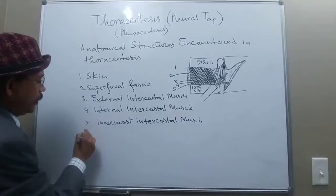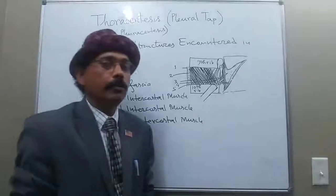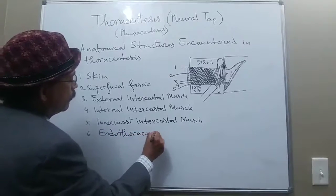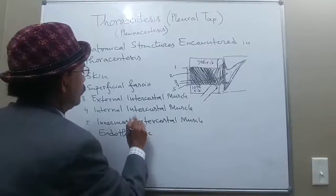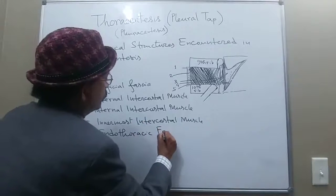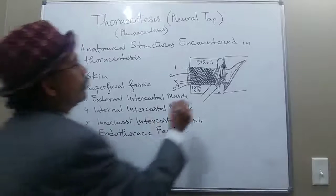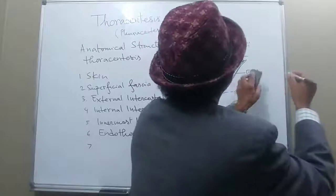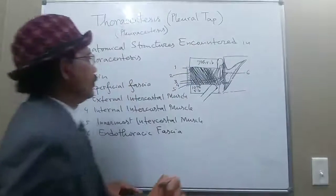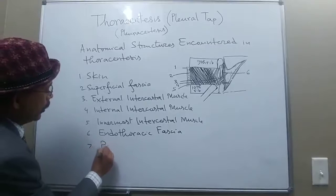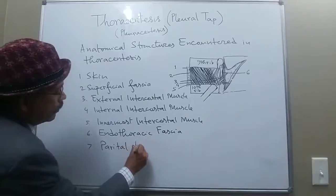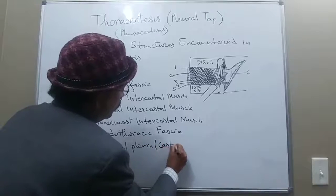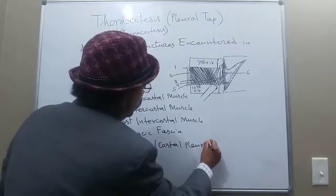After the innermost intercostal muscle, we encounter the endothoracic fascia — that is number six — and then we reach the parietal pleura, specifically the costal pleura.